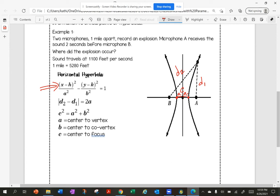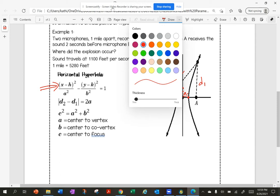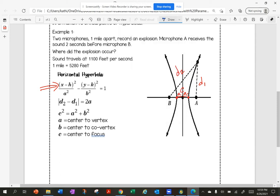And B is the distance from the center to the co-vertex, but I'm not really going to be working with it in this problem. And then C is from the center to the focus. So I have focus at A and B. So this is C and this is C.